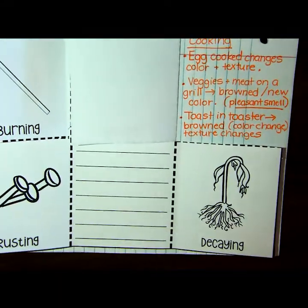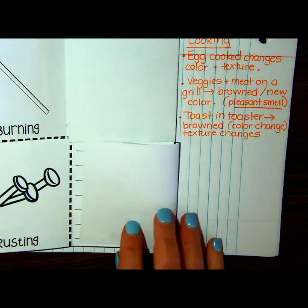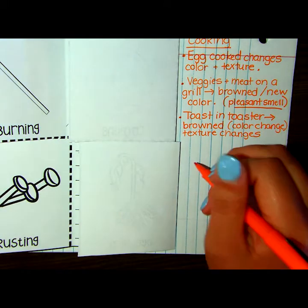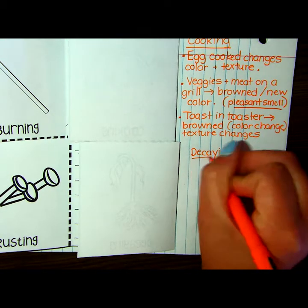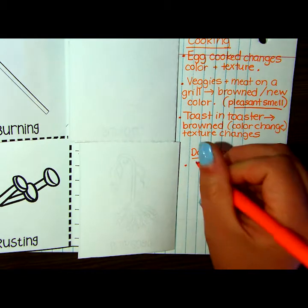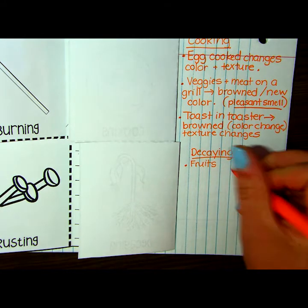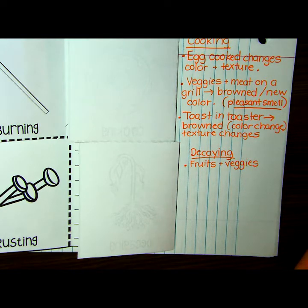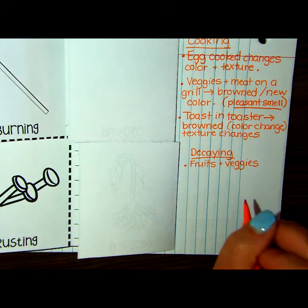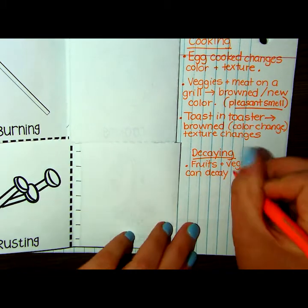When things start to decay, they release a gas that produces an odor — however, it's not so pleasant. Some examples of decaying: if you look in your refrigerator, you might see some fruits or vegetables. You know that they're decaying and a chemical change has happened because a new substance is formed — it is called mold. Fruits and veggies can decay, and mold is produced.